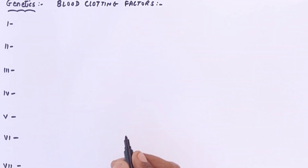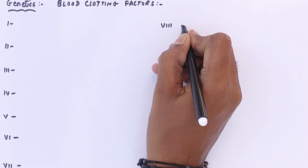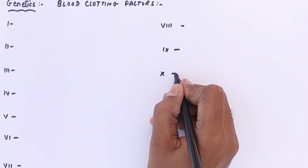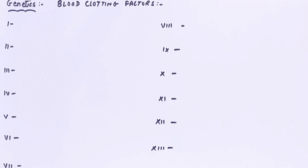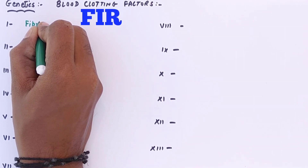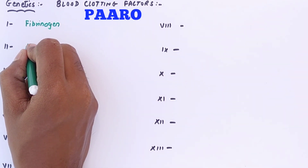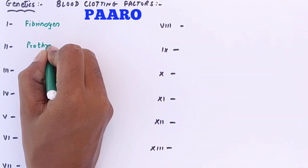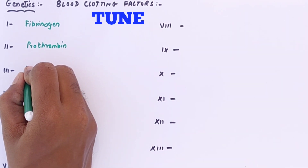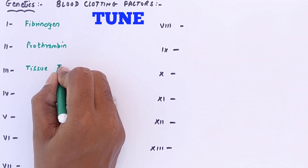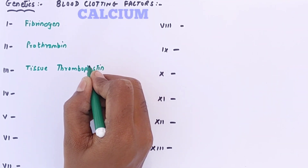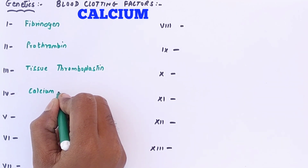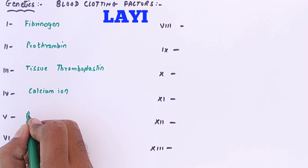There are thirteen blood clotting factors in total and this video covers all thirteen. The sixth factor is not yet known, so the word 'na' represents that absence. Now: Fir stands for fibrinogen (factor 1), Paro stands for prothrombin (factor 2), Tunay stands for tissue thromboplastin (factor 3), and Calcium is factor four.